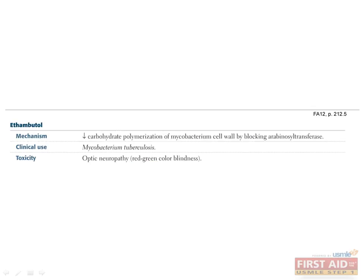Ethambutol is the final drug in the four-drug therapy — remember the mnemonic RIPE — used to treat M. tuberculosis. It works by blocking the enzyme arabinosyltransferase, which ultimately decreases carbohydrate polymerization of the cell wall of M. tuberculosis. Remember the unique toxicity caused by ethambutol: optic neuropathy, resulting in red-green color blindness.